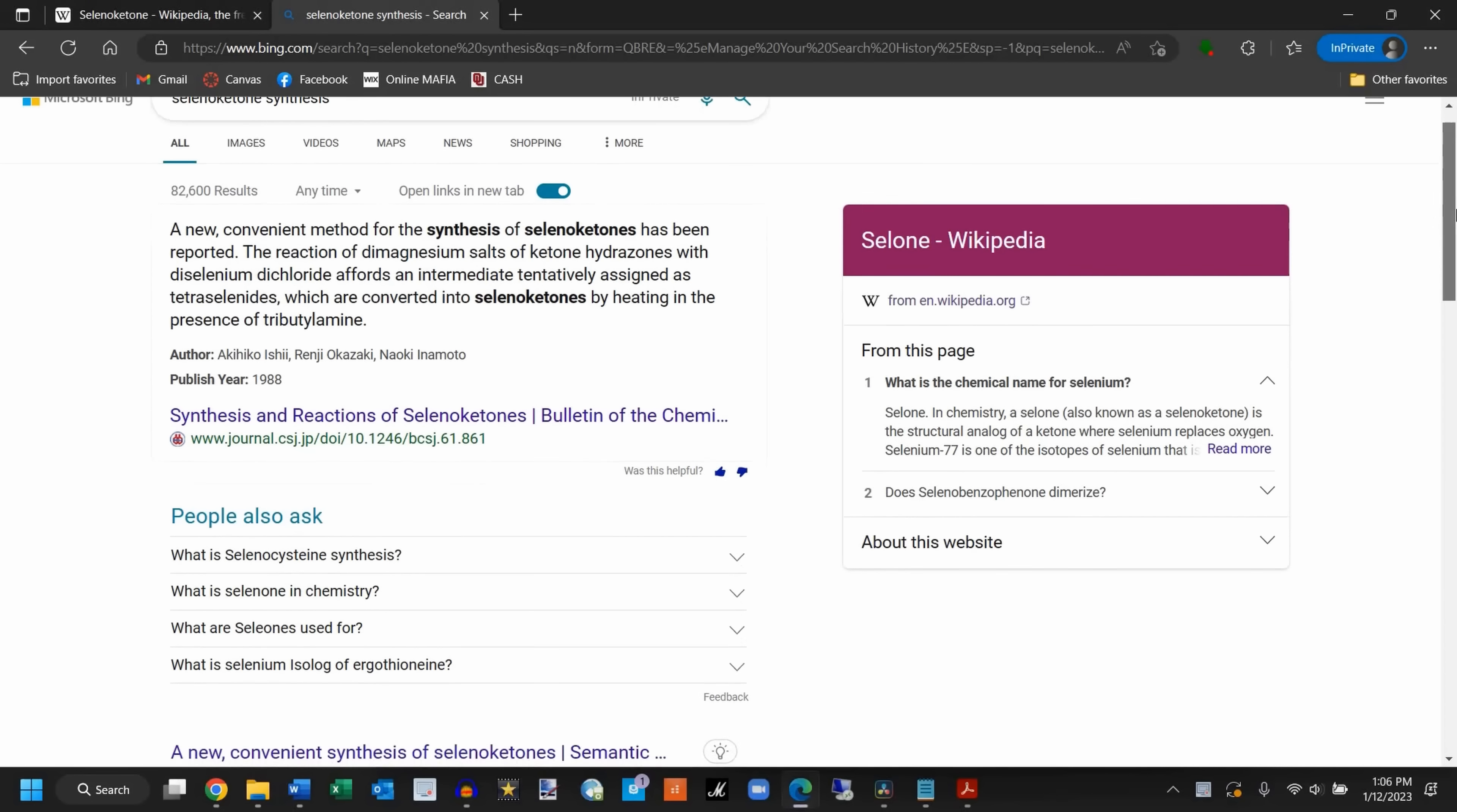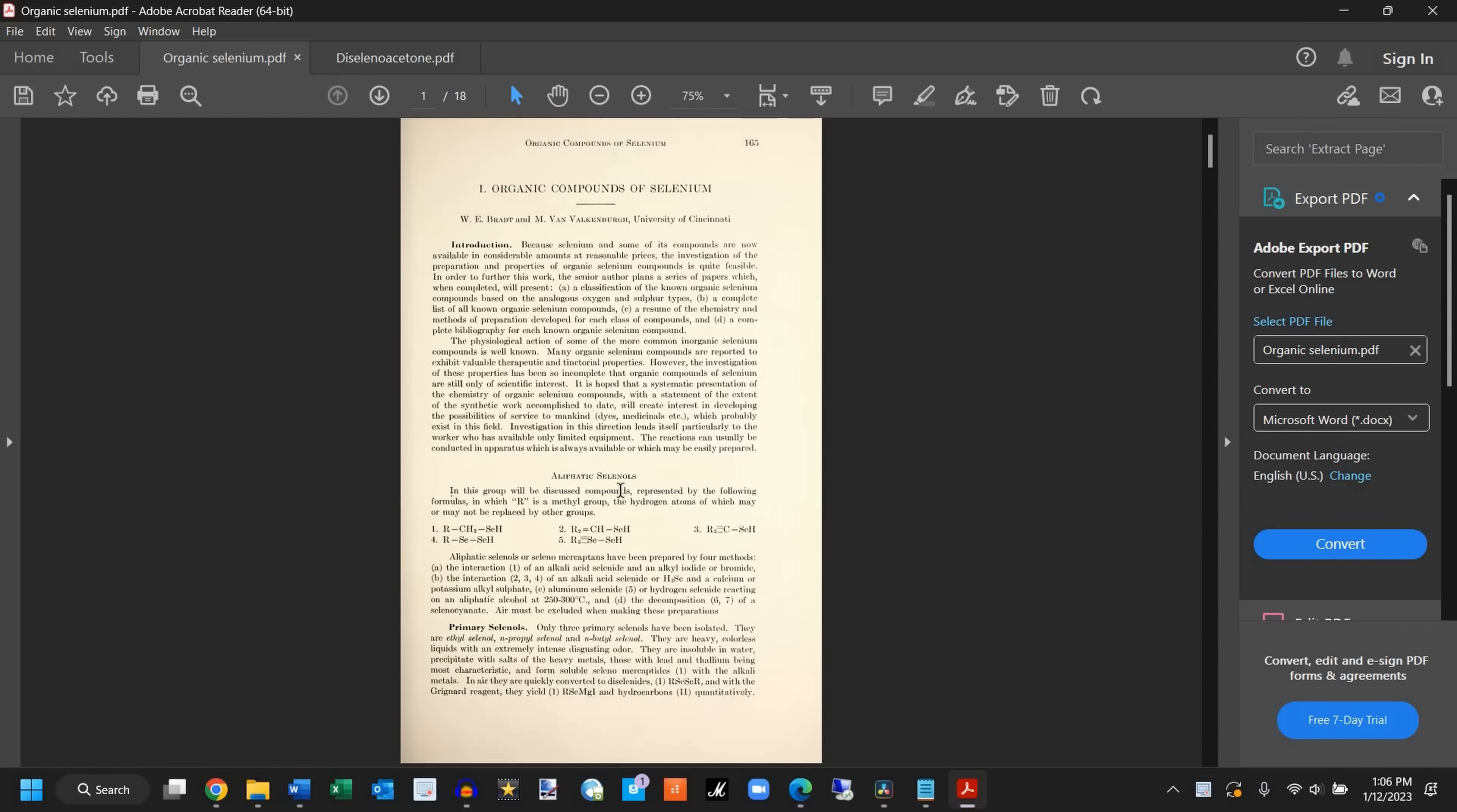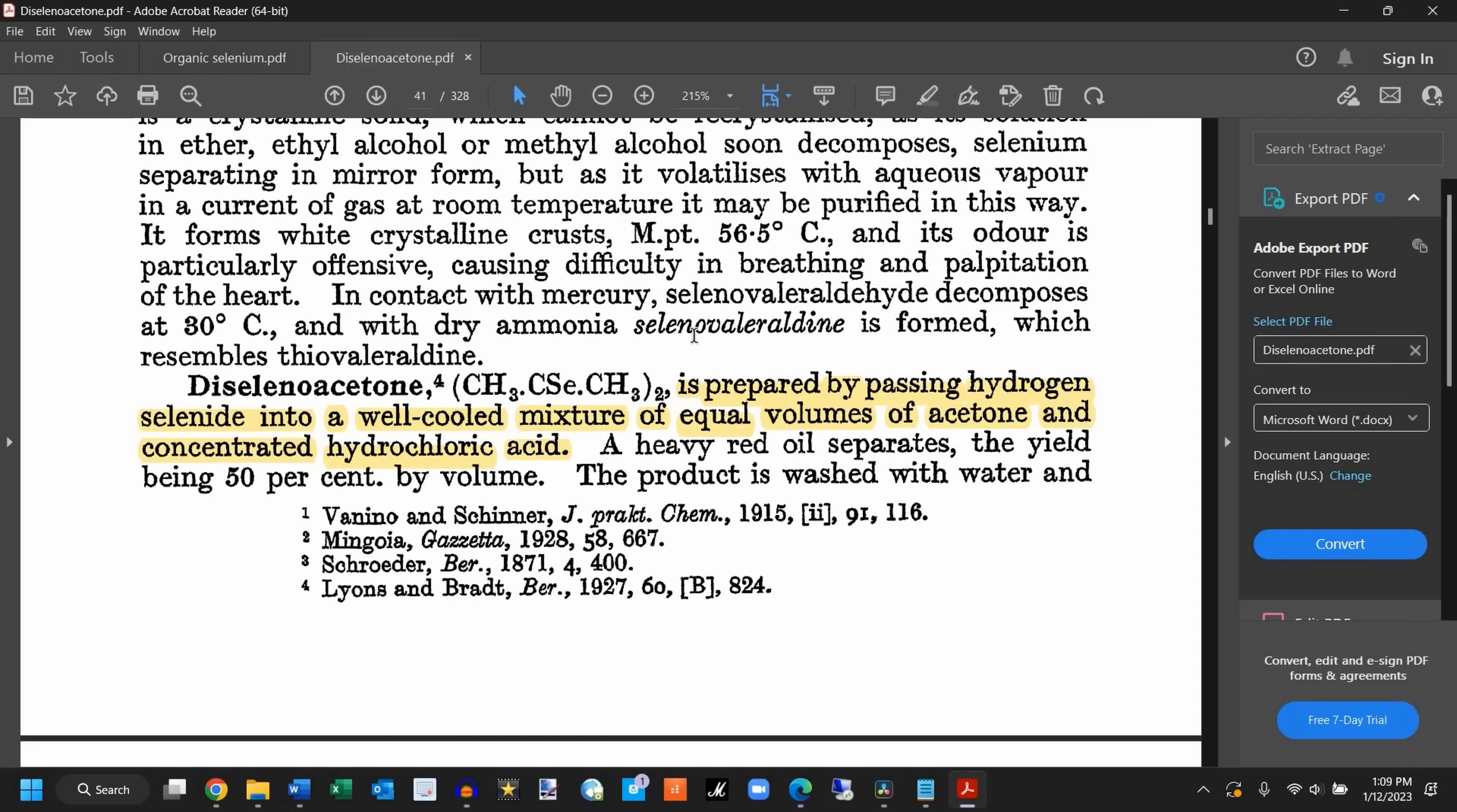This, by itself, was pretty encouraging news, but I wanted to know more before proceeding, so I kept searching for a few more hours, and eventually came up with two scientific papers that discussed the synthesis of diselenoacetone. Much to my delight, both seemed to agree on a common synthesis that was very similar to the one discussed by the Germans, but this time, the acidic acetone mixture was more clearly specified as a 50-50 mix of cold acetone and hydrochloric acid.